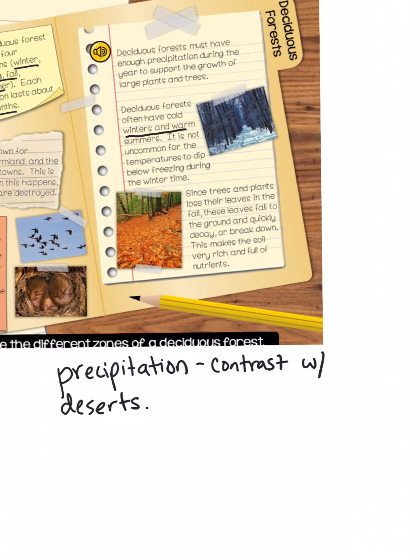Deciduous forests often have cold winters and warm summers. It's not uncommon for the temperatures to dip below freezing during the wintertime. Since trees and plants lose their leaves in the fall, these leaves fall to the ground and quickly decay or break down. This makes the soil rich and full of nutrients.